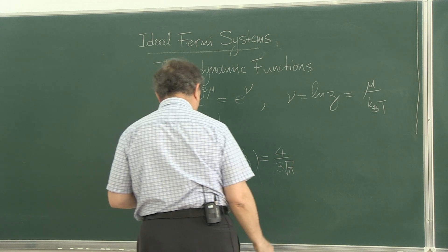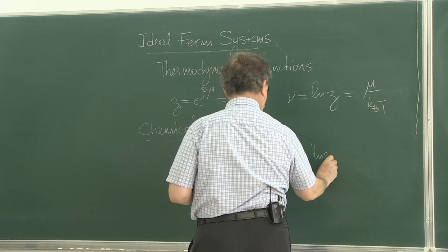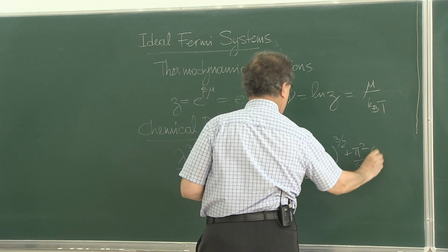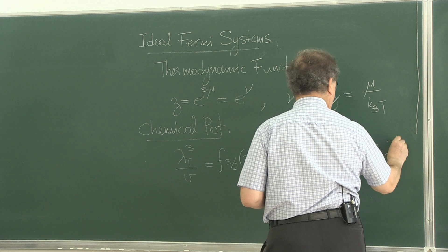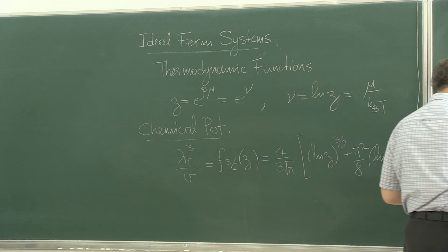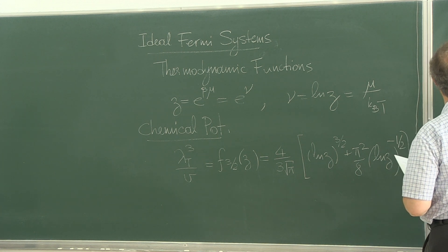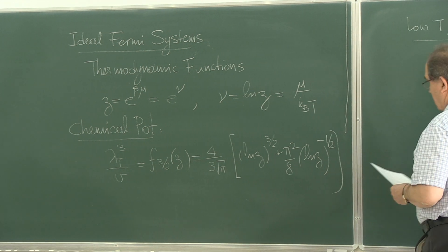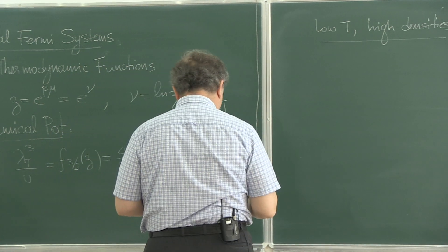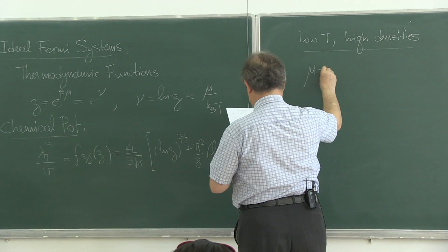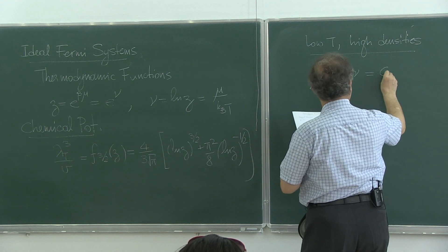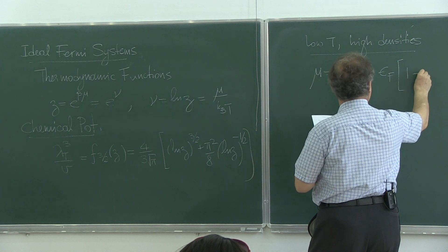I will look at low temperature, high density limits soon. ln z, 3/2 plus pi squared over 8, ln z minus 1. So, at low temperatures, high densities, this is the quantum limit, of course, that gives you kB T mu, which is, yeah, this is the important result, isn't it?